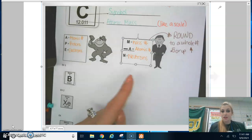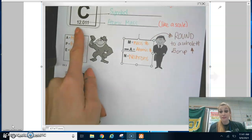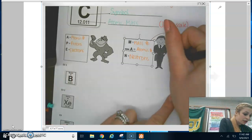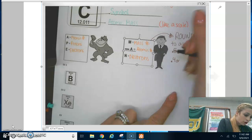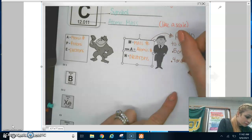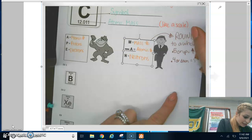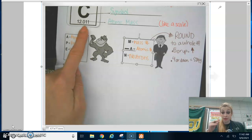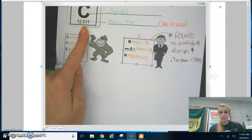So let's just make sure that we totally understand that we use ape man not to find atomic number. We already have that. It's on the periodic table. We're not using it to find that. We use it to find protons, electrons, and neutrons. You're using it to find these subatomic particles. Let's practice. We have three examples.